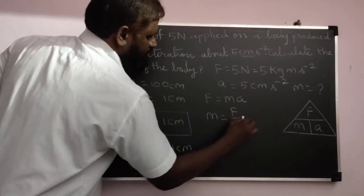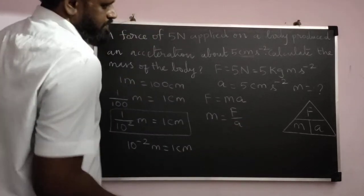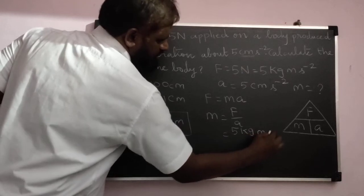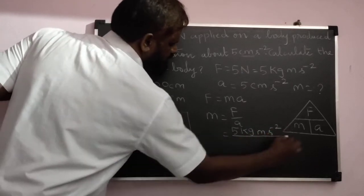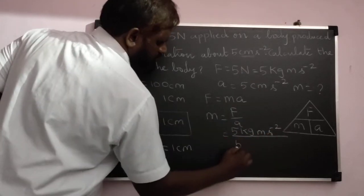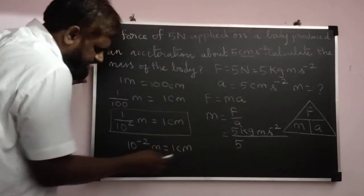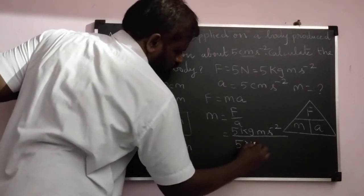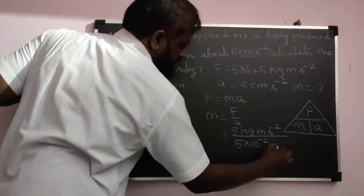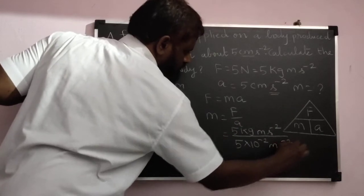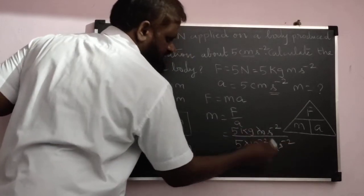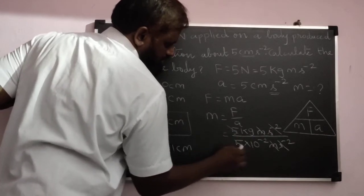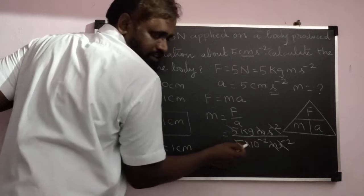From this formula, M is equal to F by A. F is 5 kilogram meter second power minus 2 divided by 5 centimeter. 1 centimeter is equal to 10 power minus 2 meter, so 10 power minus 2 meter second power minus 2.